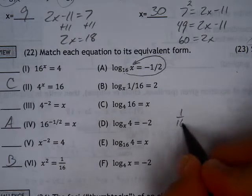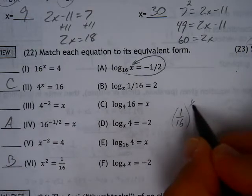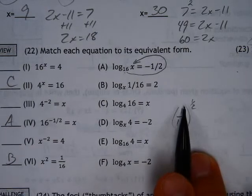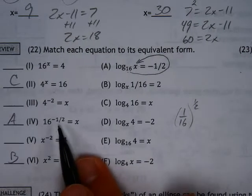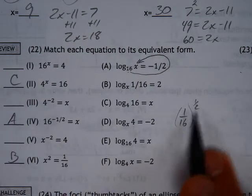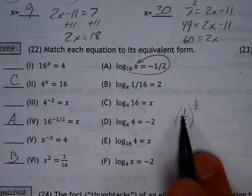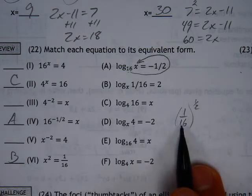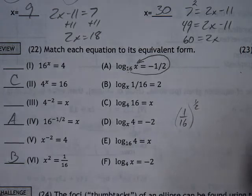So, in the process, it's 1 over 16. Now it's still to the 1 half power, but notice that 1 half power is a positive 1 half power. So that's still saying the square root. I just don't have to flip it anymore. The square root of 1 is 1, the square root of 16 is 4. The answer is 1 over 4.